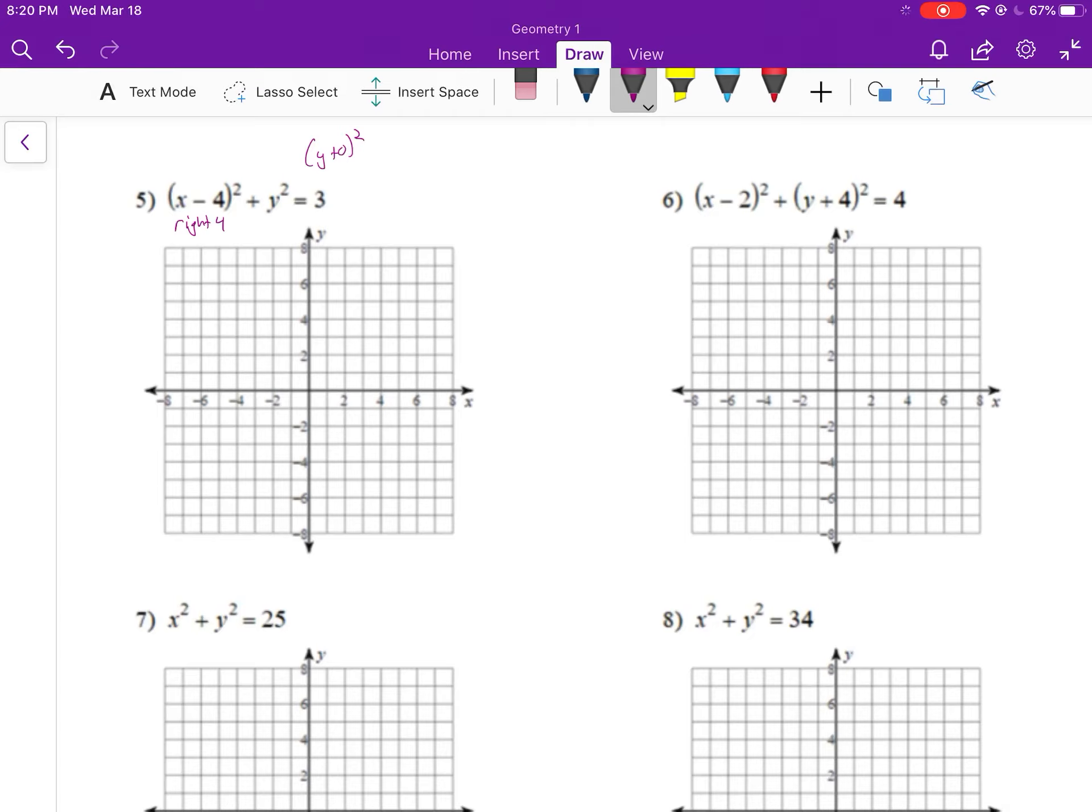Nothing's written with the y, so we don't go up or down at all. So our center from that information is simply (4, 0). Right four, up or down zero. And then our radius, this is another part that's a little different, is the square root of three.